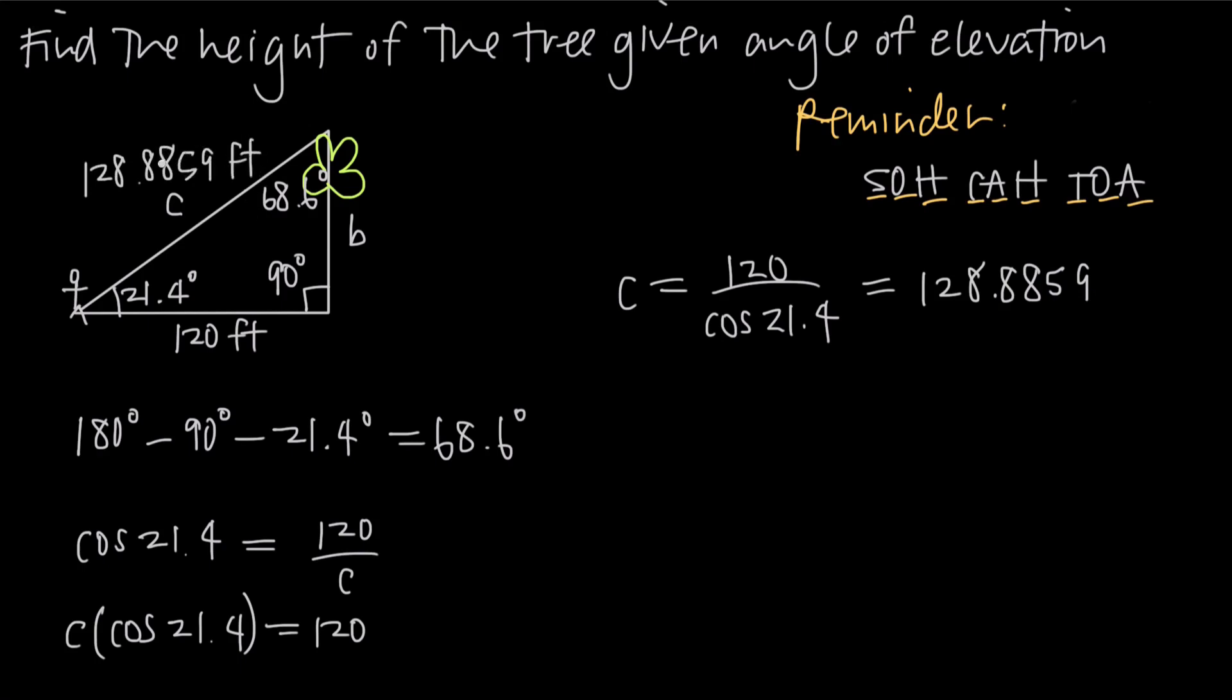Now we can use this information, the length of the hypotenuse, to find the length of the opposite side, which is the height of the tree. If we take sine of the angle of elevation, sine of 21.4, remember sine is opposite over hypotenuse. So we want the opposite side, which is B, divided by the hypotenuse, 128.8859. To find B, we multiply both sides by 128.8859, and get B equals 128.8859 times sine of 21.4. When we use our calculators, B equals approximately 47.0275.